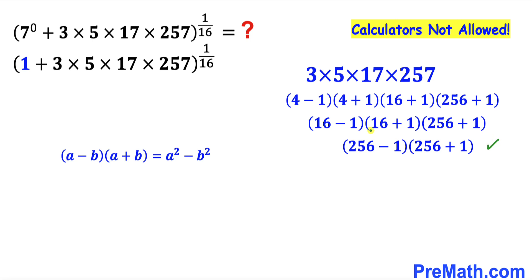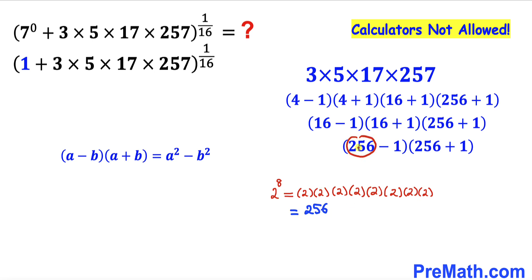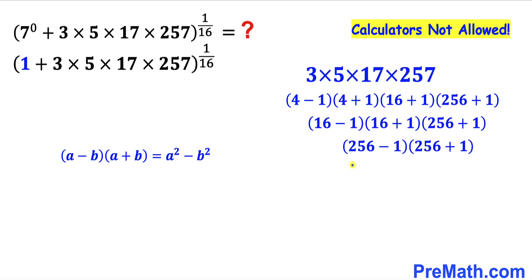As you can see in this next step, I have replaced (16−1) times (16+1) by 256 minus 1 and the rest is the same. Now let's recall that 2 to the power 8 equals 256. So wherever we see 256, I'm going to replace it by 2 to the power 8. Therefore this expression becomes (2^8 − 1) times (2^8 + 1).